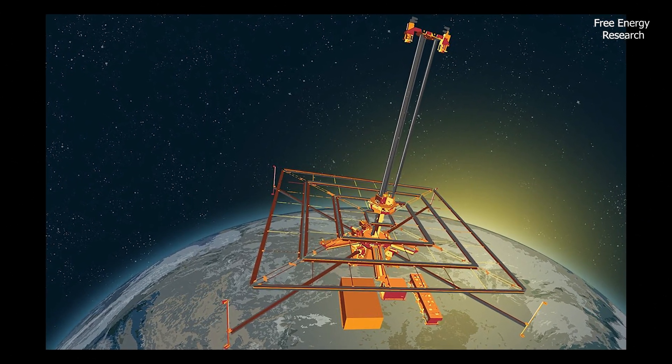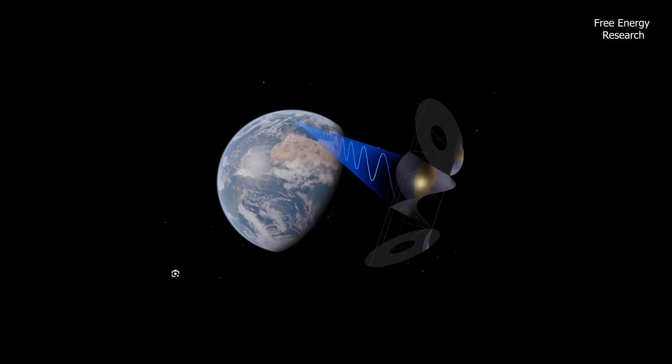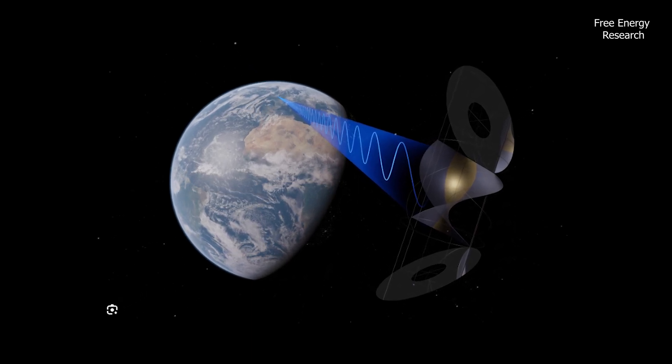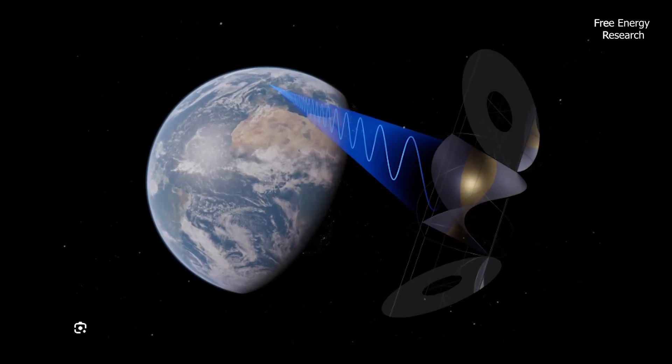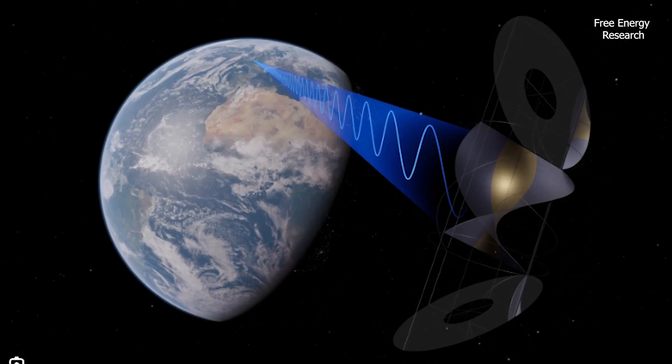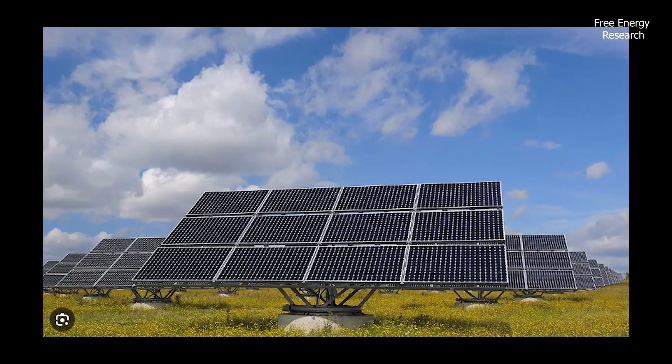This could be especially important for places that currently have no access to reliable power, such as developing countries. However, the technology is not quite ready for mass-scale adoption according to the Caltech team, as solar power generation and transmission needs to be rethought for use on a large scale in space. Solar panels are bulky and heavy, making them expensive to launch, and they need extensive wiring to transmit power.